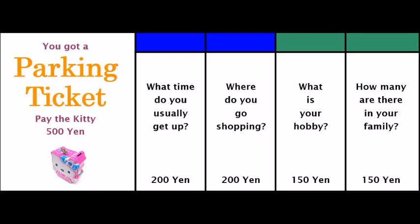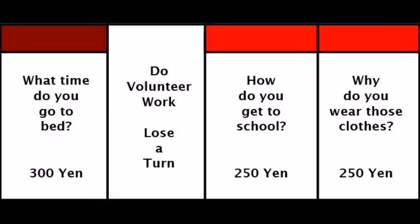Where do you go shopping? What time do you usually get up? Pay the kitty 500 N. Why do you wear those clothes? How do you get to school? Lose a turn. What time do you go to bed? Go to the dog house.